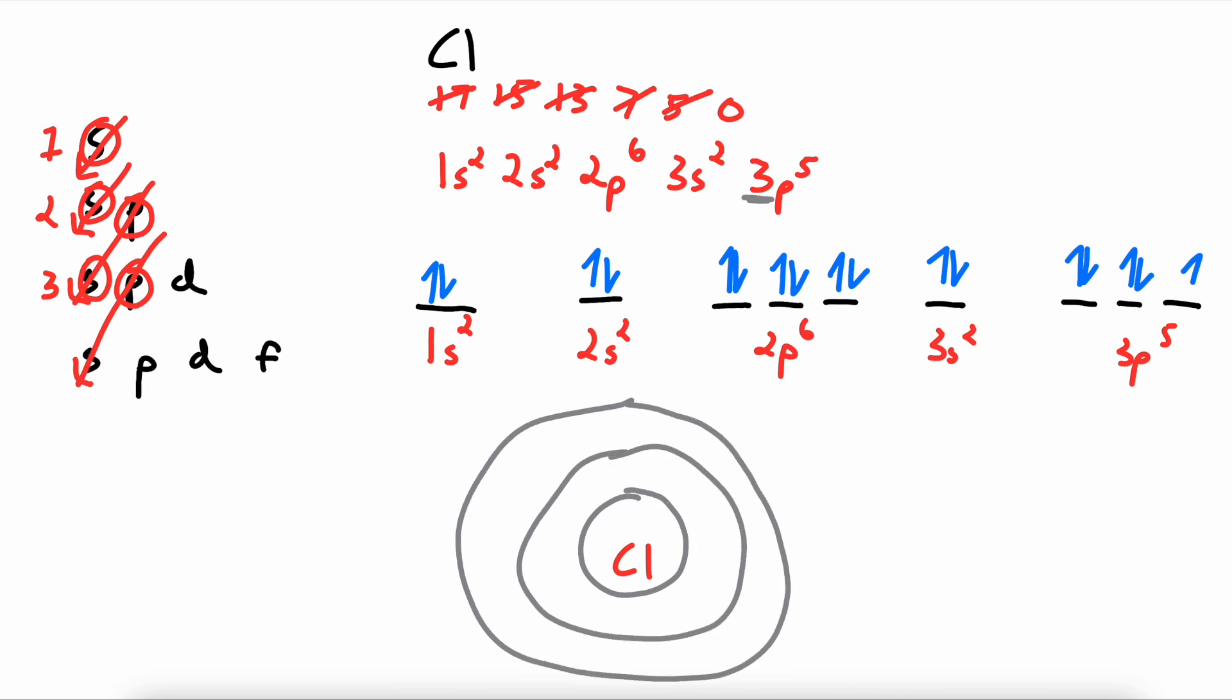Apologies for my horrible circles. Now I will draw the electrons in yellow. The first energy level has 2 electrons. The second energy level has 2 plus 6 electrons, which will total 8. And then the third energy level has 2 plus 5 electrons, which will total 7.